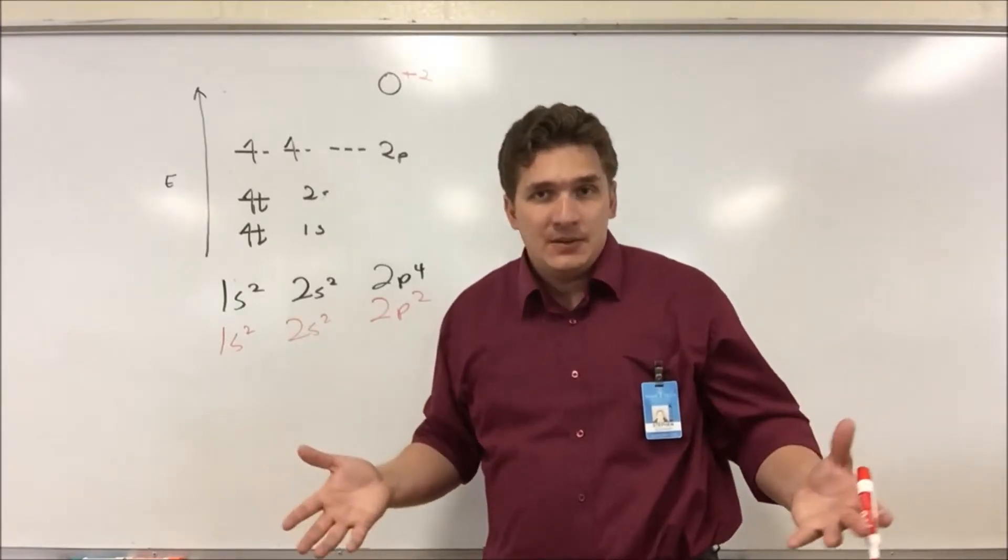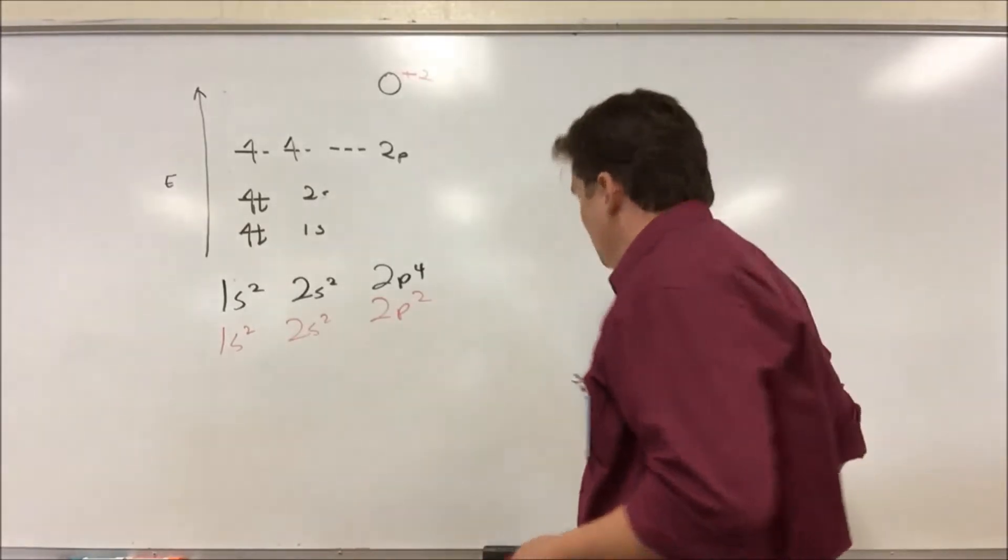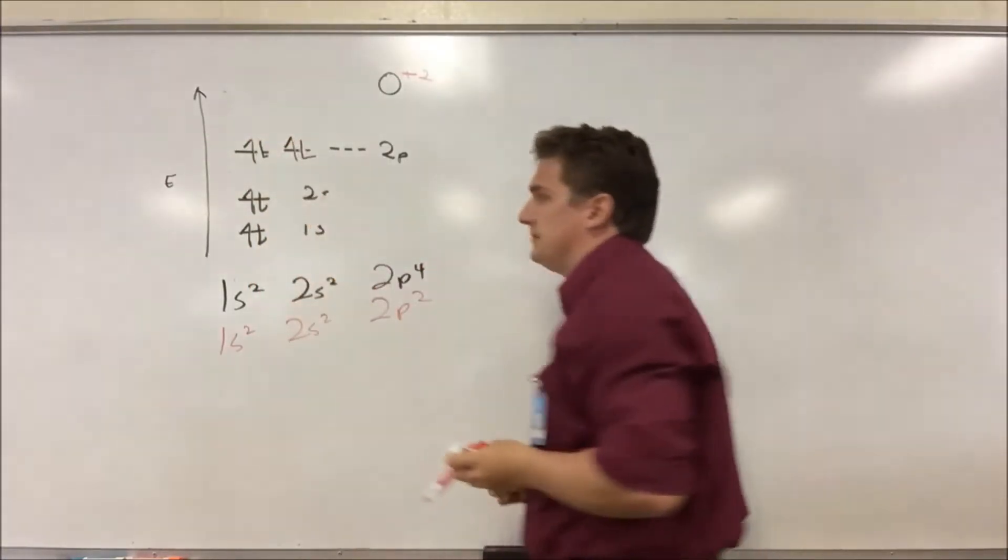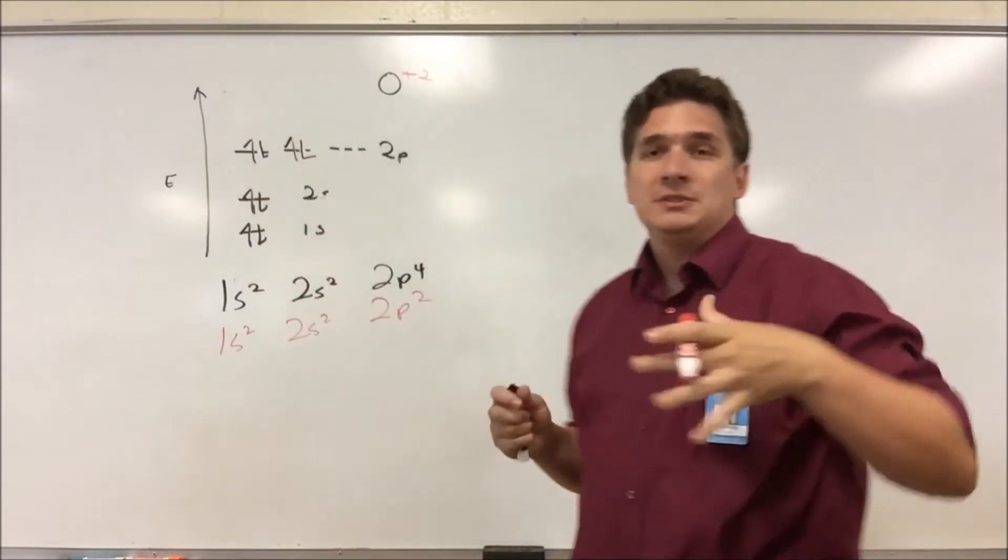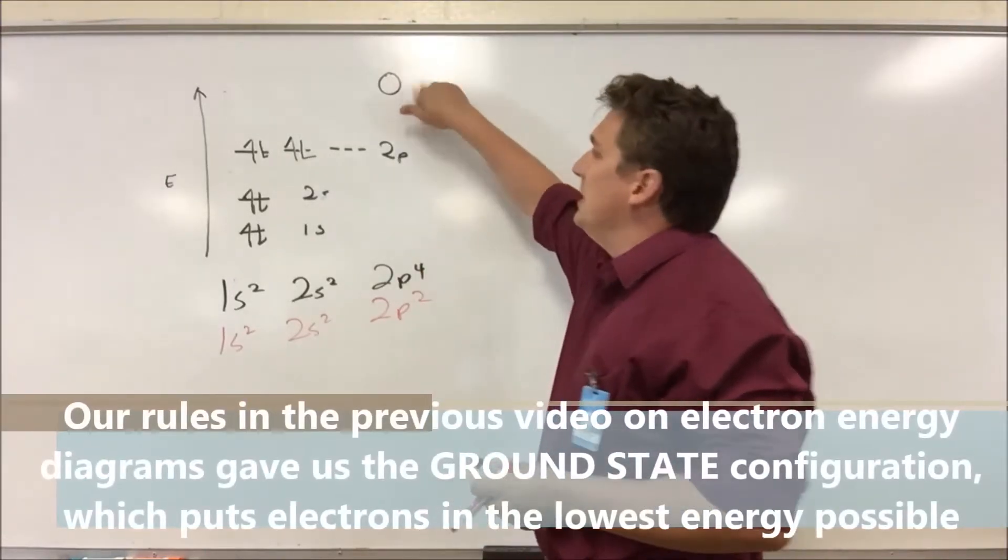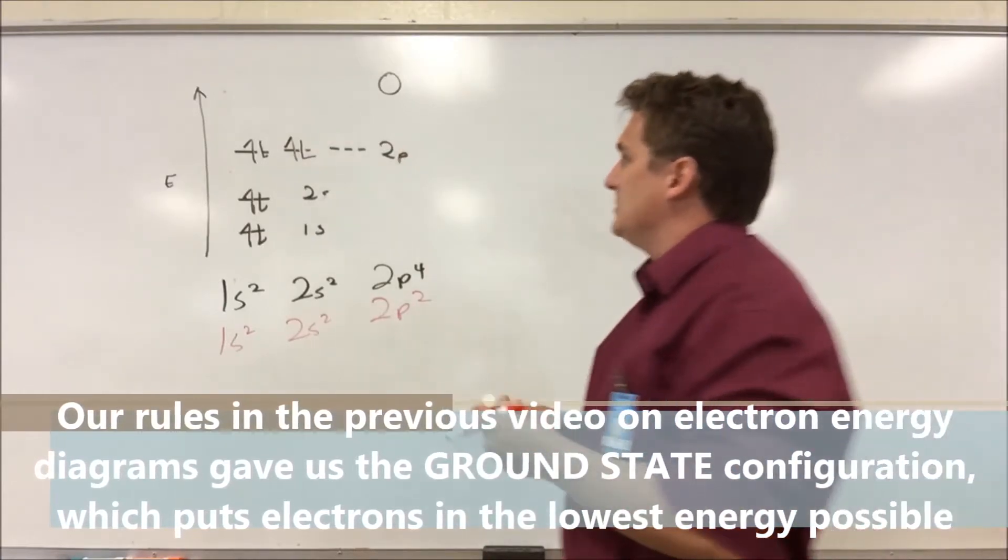What if we have an excited state? Well, an excited state happens when the electrons are no longer in what's called the ground state configuration. When we drew our orbital diagrams before, we have what was called the ground state configuration. In the ground state configuration, all electrons are at the lowest possible energy.